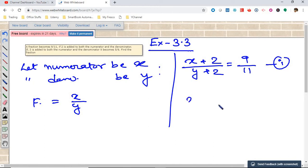The second equation: x plus 3 by y plus 3, because 3 is added to both numerator and denominator. The equation becomes 5 by 6. This is our second equation.